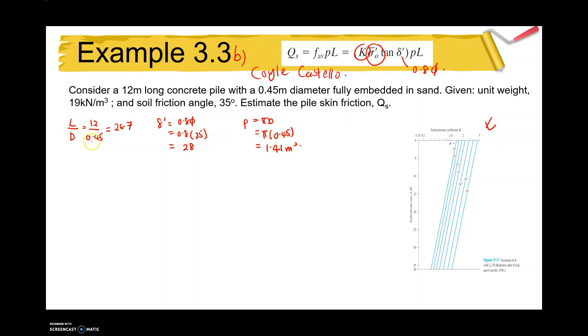After we get the ratio of L over D, we can determine the K value here. Previously in general method, you get directly the value of K in the equations. But in this Coyle and Castello equation, you need to determine by yourself using this graph. Our L over D is 26, it's around 27 here. And then 35 degrees is in here, so we go vertically upward. So our K is around here, so our K is around 1.5 value.